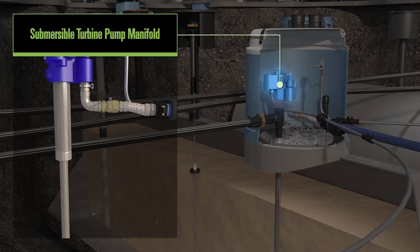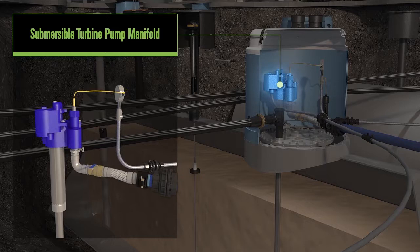The manifold houses the electrical supply to the motor and also the pathway for the fuel to get to the pipe.